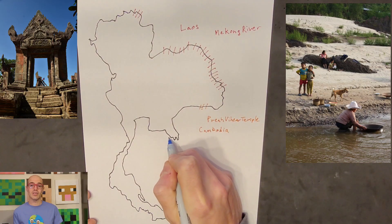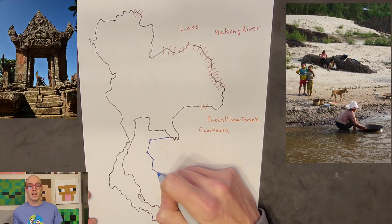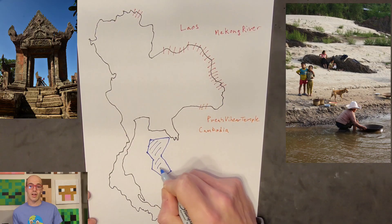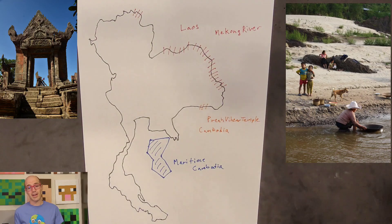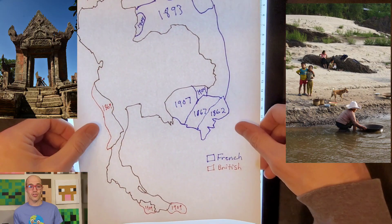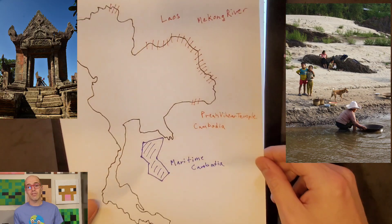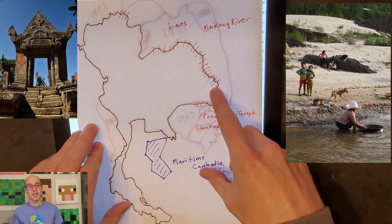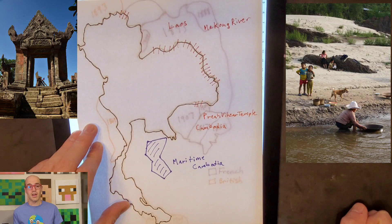One of the major border disputes occurred over the Preah Vihear Temple, a UNESCO World Heritage Site situated on the border between Thailand and Cambodia. The conflict escalated in the mid-20th century and led to sporadic clashes between the two countries. Another significant border dispute arose over areas along the Mekong River, particularly in northeastern Thailand, where overlapping claims with Laos sparked tensions.